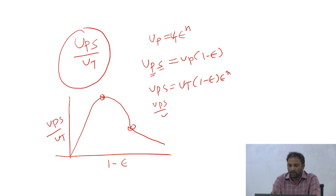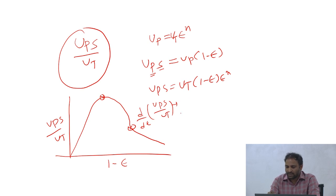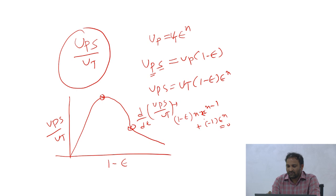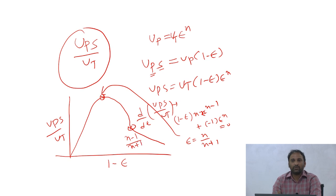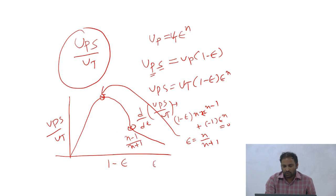By differentiating u_ps/u_t once with respect to epsilon and setting it to zero, we get: (1 - epsilon) times n times epsilon to the power (n-1) minus epsilon to the power n equals zero, which gives epsilon equals n divided by (n+1). The double derivative gives the second critical point as (n-1) divided by (n+1). This plot is drawn for n = 4.65, the Richardson-Zaki value.